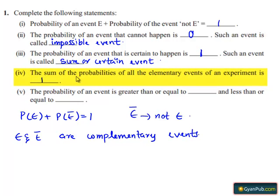Moving on to the fifth bit, the probability of an event is greater than or equal to 0 and less than or equal to 1. That is, P(E) is always greater than or equal to 0 and less than or equal to 1.